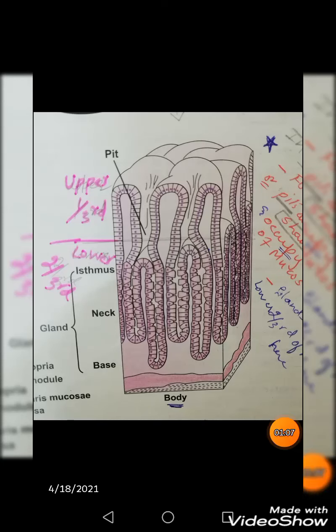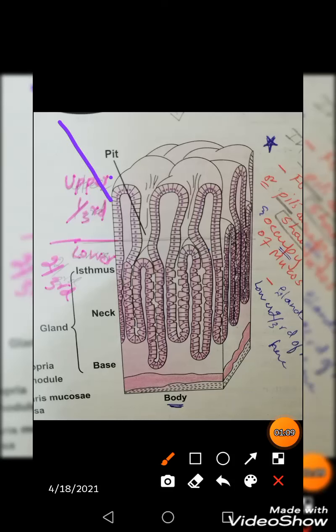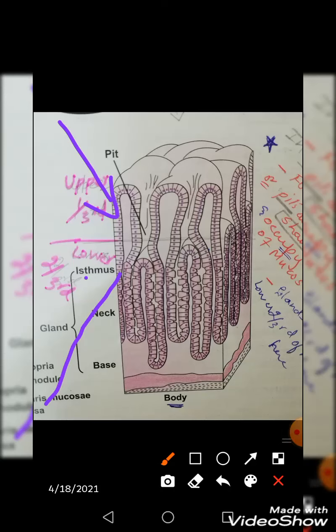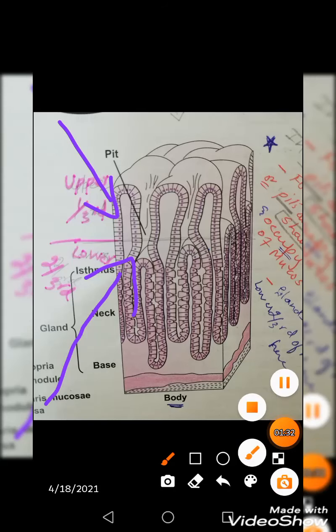In the body of the stomach, the pit occupies the upper one-third of the mucosa, while the secretory parts — the neck, isthmus, and base — occupy the lower two-thirds. This is how the gland extends from just below the pit down to the base, embedded within the mucosa.